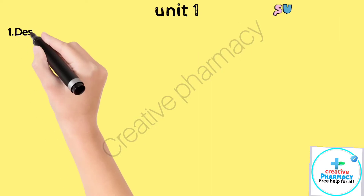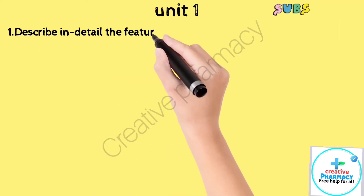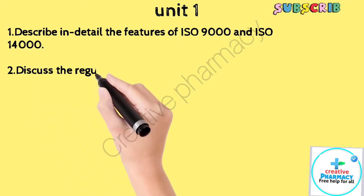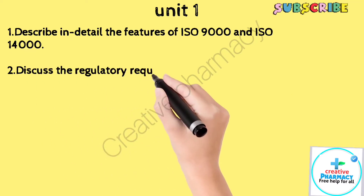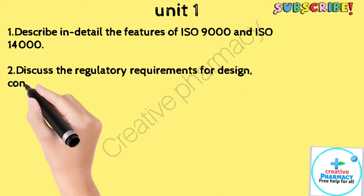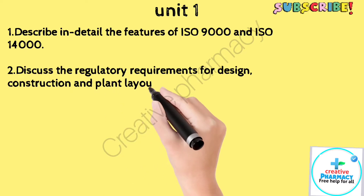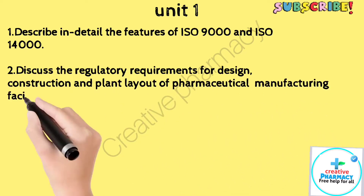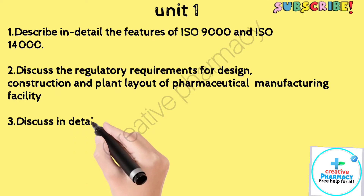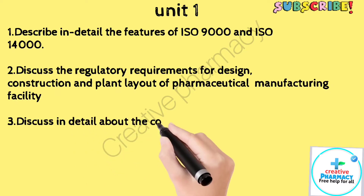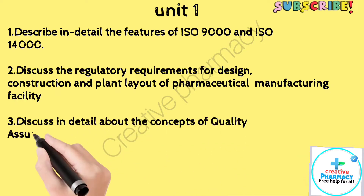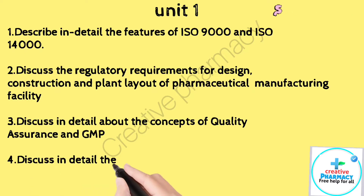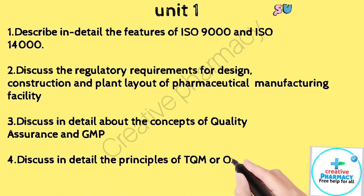Unit 1. Question 1: Describe in detail the features of ISO 9000 and ISO 14000. Question 2: Discuss the regulatory requirements for design, construction and plant layout of pharmaceutical manufacturing facility. Question 3: Discuss in detail about the concepts of quality assurance and GMP. Question 4: Discuss in detail the principles of TQM.